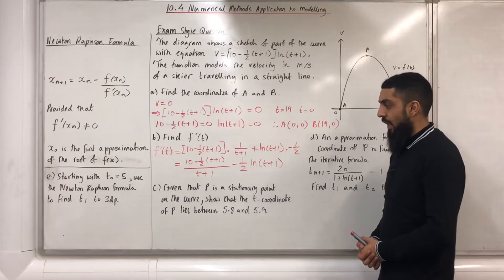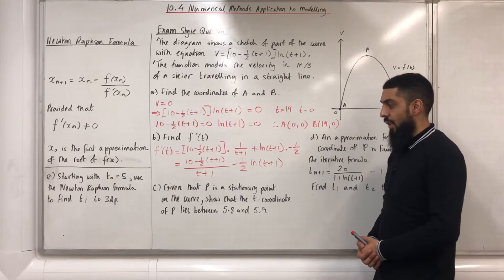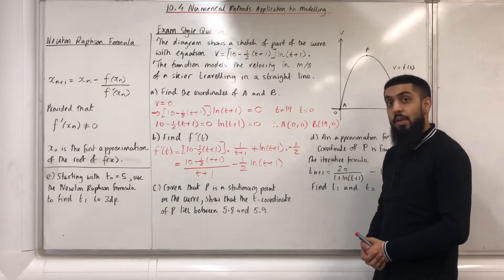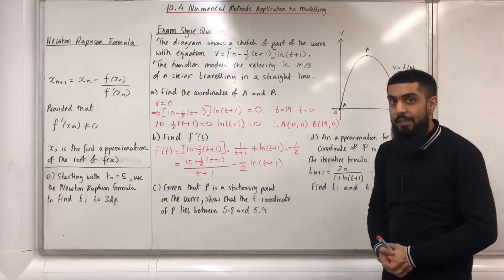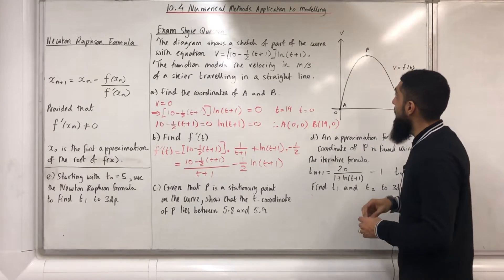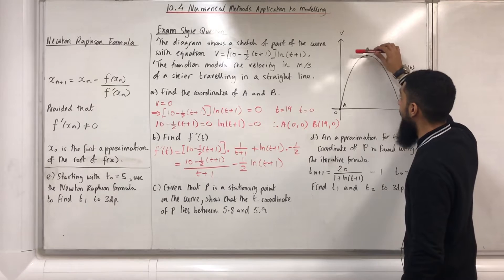Moving on to part C. Given that P is a stationary point on the curve, show that the t coordinate of P lies between 5.8 and 5.9. Ladies and gents, let's go back to the graph. First of all, the point P is a stationary point because the gradient of the tangent to the curve at point P is 0.